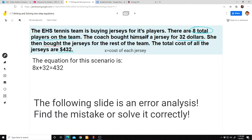This should say herself. Sorry for the typo here. But nonetheless, let's focus on the key information. There are eight total players on the team. The coach bought herself a jersey for $32. She then bought the jerseys for the rest of the team. And we're going to say X is equal to the cost of each jersey.